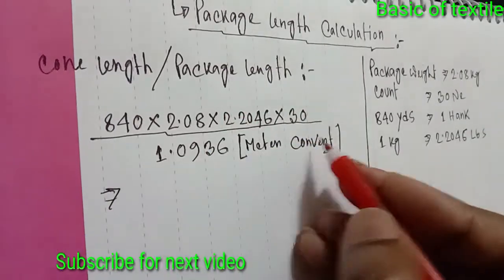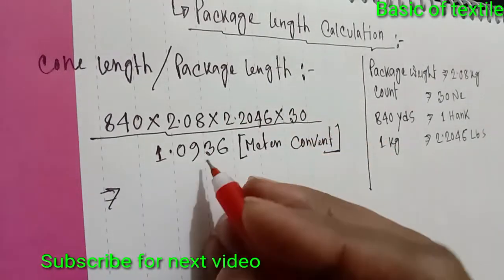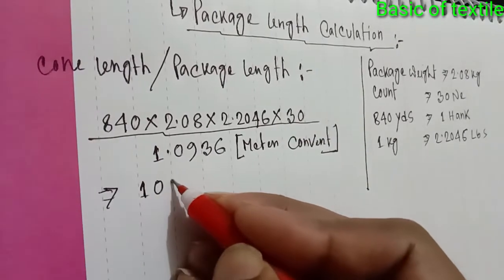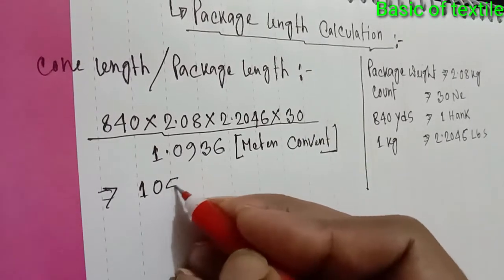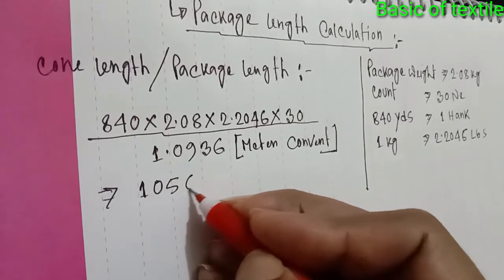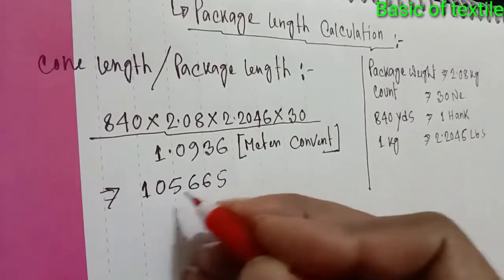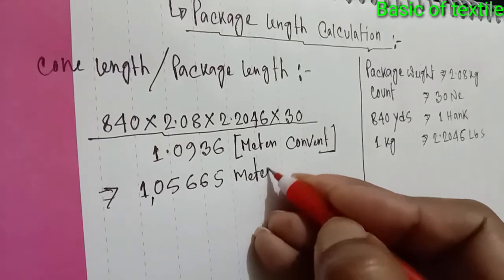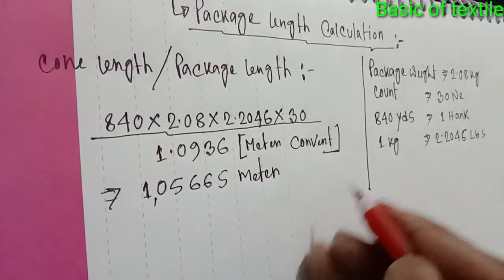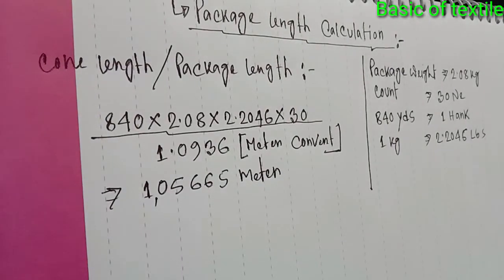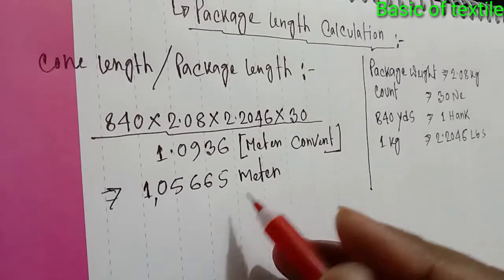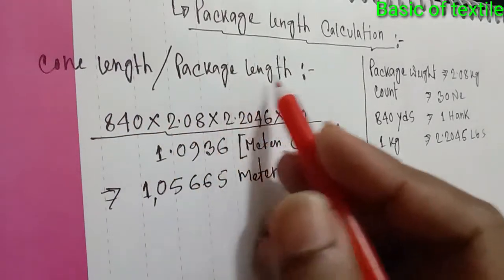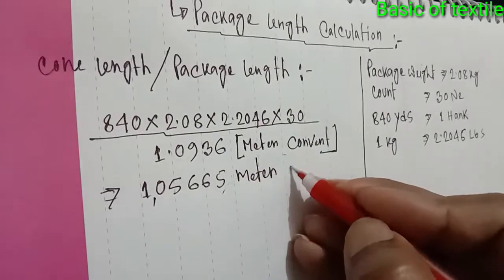To get the conclusion: 1.055665. The labra moon length, or package length, is taken along as stated.